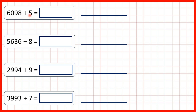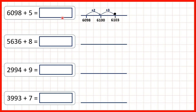We need to add a single-digit number to a four-digit number. First, we have 6,098 plus 5. If we add 2, that will take us to 6,100, because we know 98 plus 2 is 100. But that's adding 2, and we want to add 5, so we need to add 3 more. And that gives us our answer: 6,103.